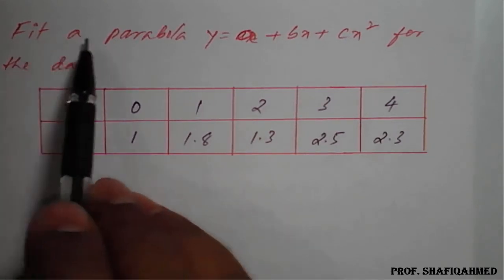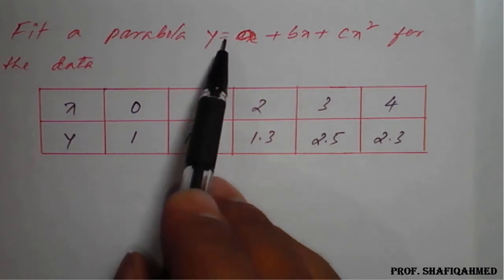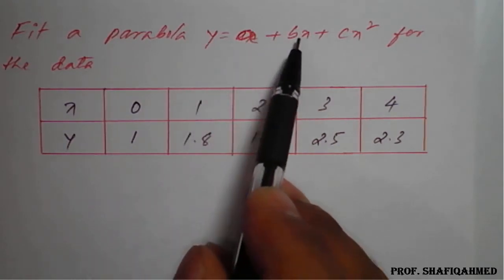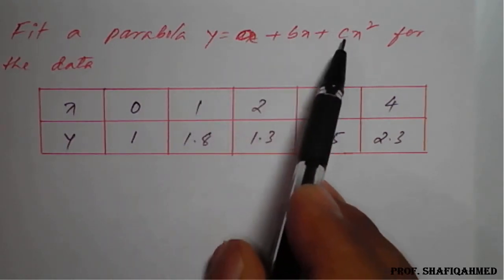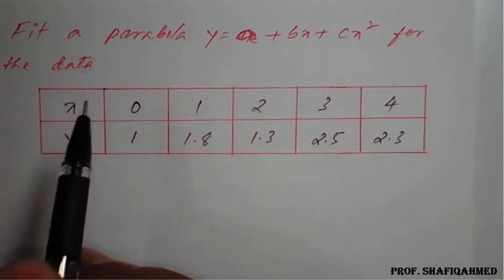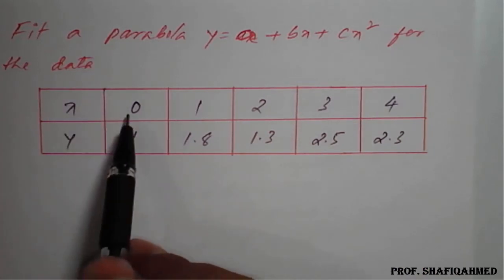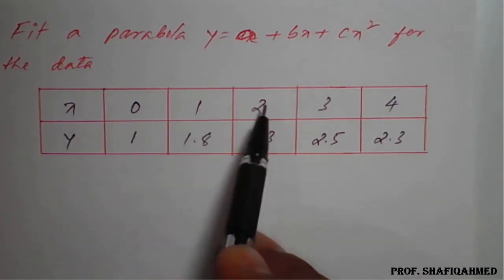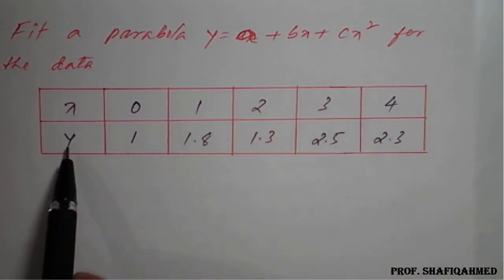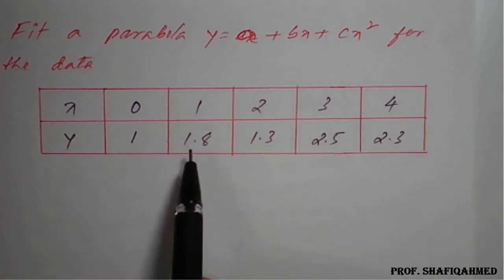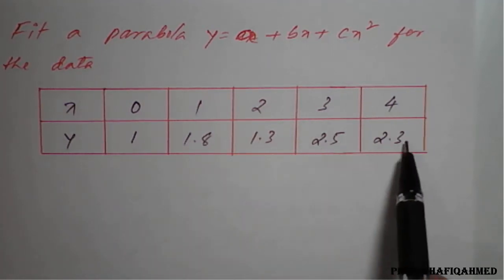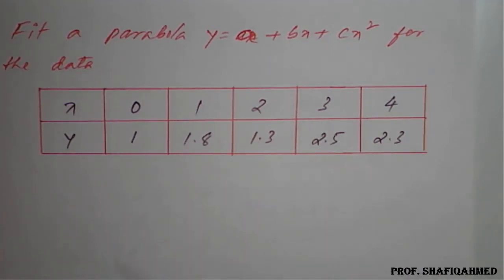The problem is: fit a parabola y = a + bx + cx² for the data — x values: 0, 1, 2, 3, 4 and y values: 1, 1.8, 1.3, 2.5, 2.3.